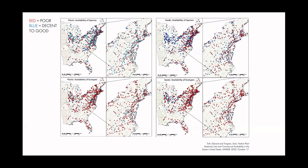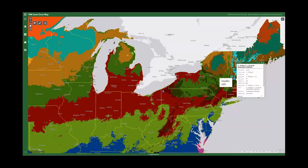Here is the eastern seaboard availability of native ecotype seeds and plants. Red means poor availability; blue means decent to good. This was published last October. There are very few areas with local ecotype seeds available, and where they do exist, species diversity is very low — you won't get 50 or 100 different species to choose from, and if you do it's mostly grasses and sedges. My point is: just because you're getting seeds or plants from the upper midwest doesn't mean it's not genetically appropriate for a restoration project in the northeast — in fact it could be more similar than a northeast nursery, as in the case of Leiden and Keene.